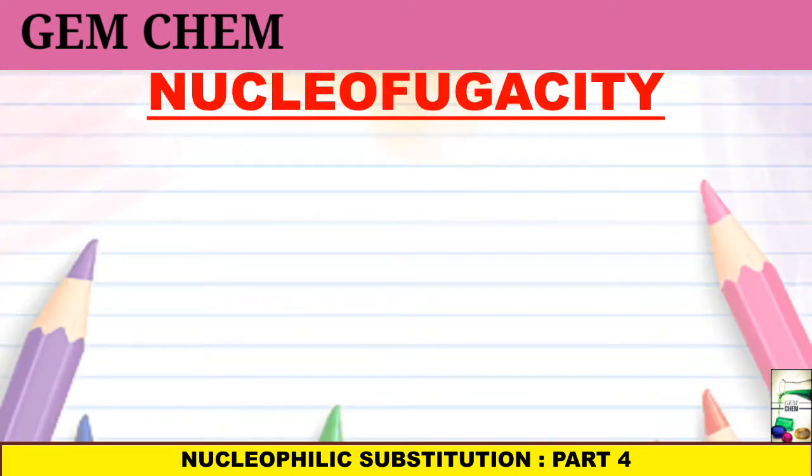Now first let us start. What do we mean by Nucleofugacity? Before starting with Nucleofugacity, we need to know what is Nucleofuge. The leaving group in a substrate is also known as Nucleofuge. And the ability of these leaving groups or Nucleofuge to leave the substrate in a reaction is called Nucleofugality or Nucleofugacity.